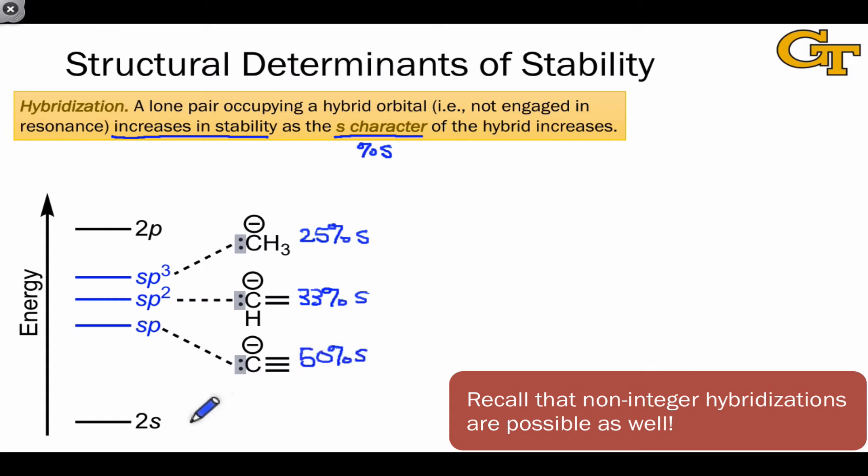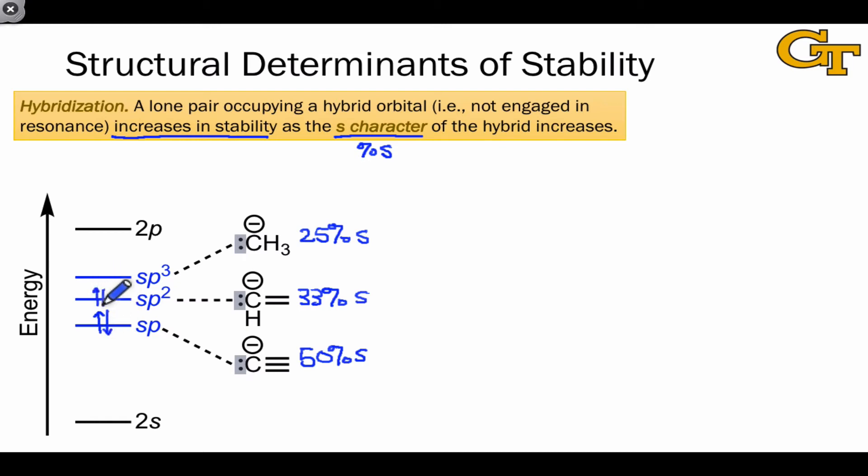Because the s orbital is lower in energy than the 2p orbital, increasing s character decreases orbital energy. And so what we can say for hybrid orbitals, which are universally occupied with electrons, is that the sp3 hybrid is the least stable and the sp hybrid is the most stable.